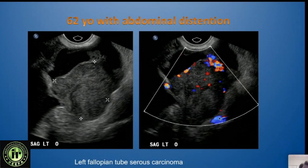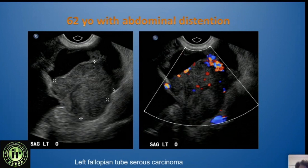This patient presented with abdominal distension because she had ascites as her presenting symptom. If you have ascites in an older woman, that is a very likely indication that the ovarian mass may be malignant.